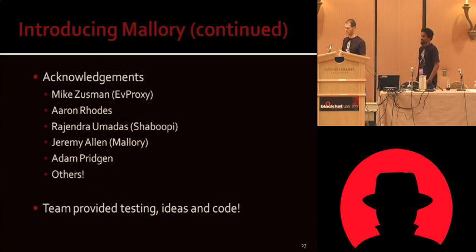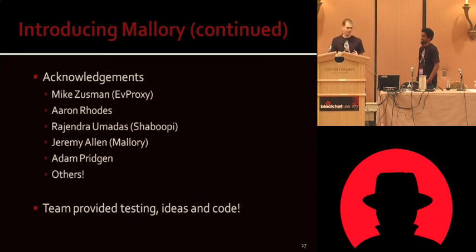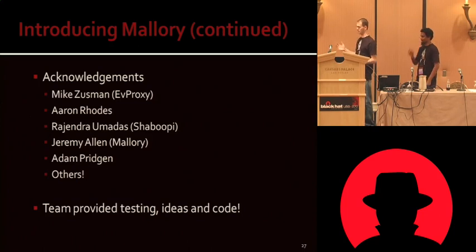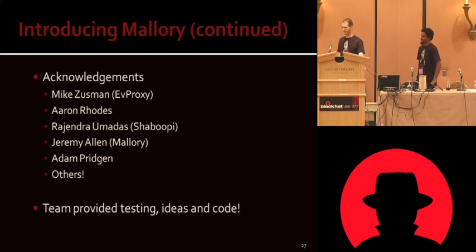This developed through a chain of different tools and ideas, and a lot of people helped us along the way. Mike Zussman started the original EV proxy that gave us some initial ideas, because we started out with just an SSL man-in-the-middle proxy and it grew out of control from there. Aaron Rhodes helped with a lot of testing and ideas — he's kind of an idea factory. Raj helped code this thing a lot. It was originally named Shaboopy, but the marketing department said that was not a correct name, so we renamed it Mallory because there wasn't actually a tool out there that had picked the name Mallory from the traditional crypto examples — Alice, Bob, and Eve.